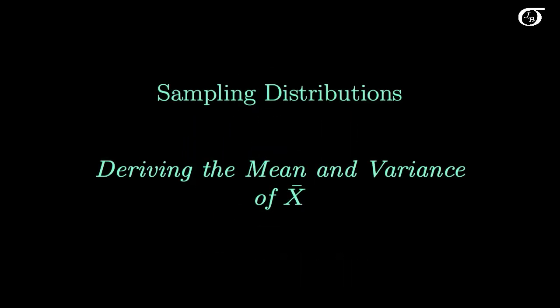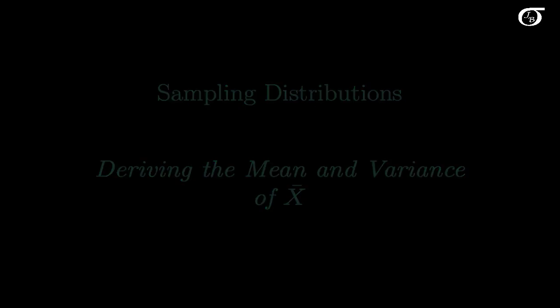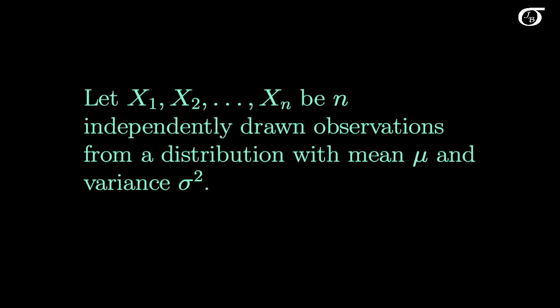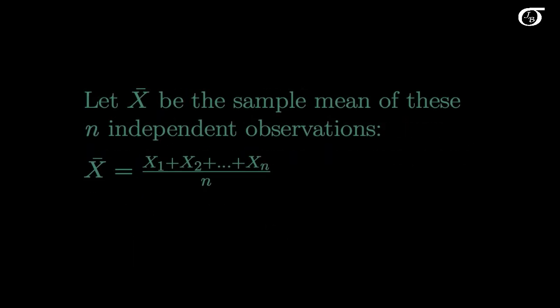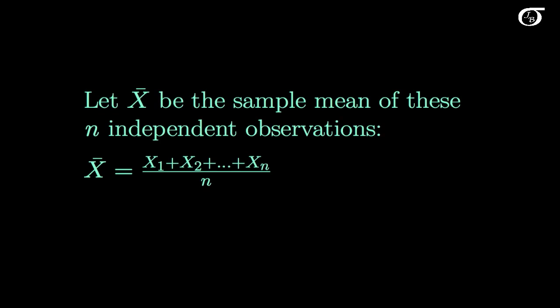Let's look into deriving the mean and variance of the sampling distribution of the sample mean x-bar. We're going to let x1 through xn be n independently drawn observations from a distribution with mean mu and variance sigma squared. So if a random variable x is drawn from this distribution, the expectation of x is mu and the variance of x is sigma squared. We're going to let x-bar be a random variable representing the sample mean of these n independent observations — simply their sum over n.